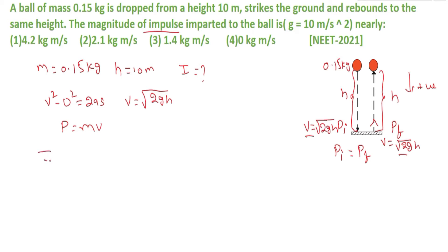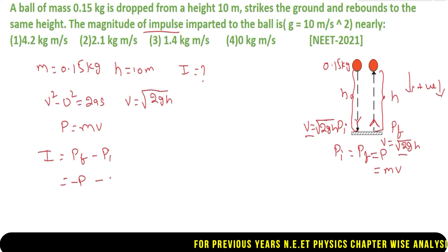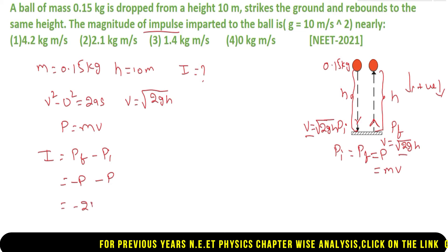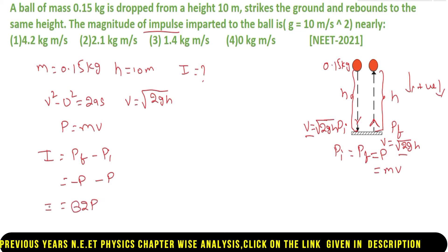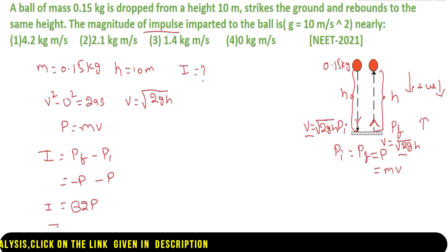The formula for impulse is I = change in momentum = P_F − P_I. Since P_I = P_F = P = mv, and P_F is in the upward direction (opposite to positive), P_F = −P, and P_I = +P. So impulse = −P − P = −2P. The negative sign means impulse acts in the upward direction.